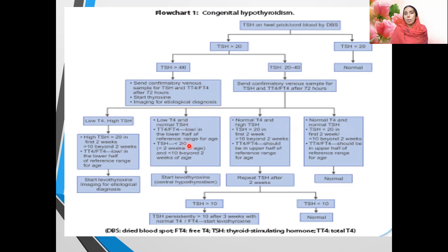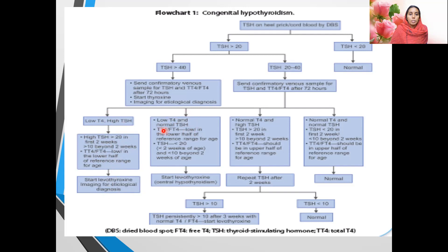The flowchart has four limbs based on T4 and TSH combinations. Low T4 (in the lower half of the reference range) with high TSH (more than 20 in the first two weeks, or more than 10 beyond two weeks): start L-thyroxine and work up for etiological diagnosis. Low T4 or FT4 with normal TSH (less than 20 in first two weeks, less than 10 beyond): also start L-thyroxine as this is taken as congenital hypothyroidism.